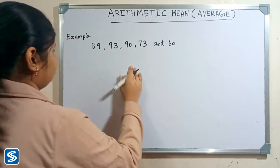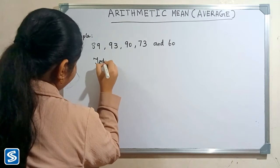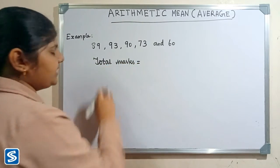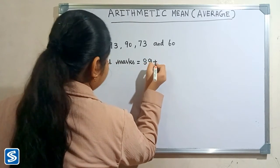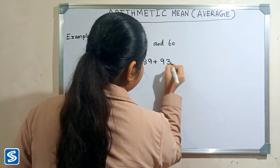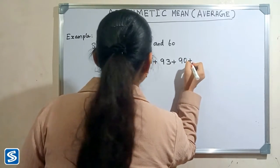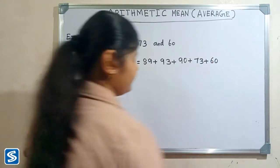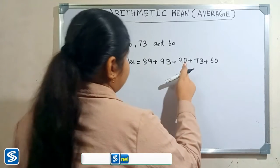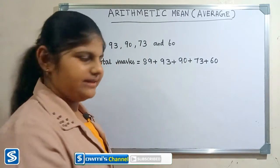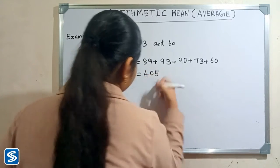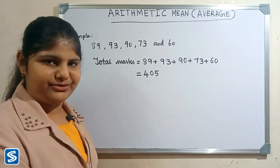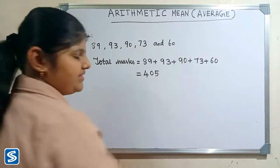First, we have to find the total marks. So, the total marks is equal to 89 plus 93 plus 90 plus 73 plus 60. When we add these, our answer will be 405. So, the total marks of 5 students is 405. The number of students is 5.